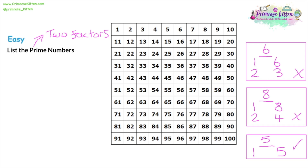Before we start, a really important thing to mention: one can be divided by one and the answer is one, but you only have one number there — one has one factor. It is not a prime number. Prime numbers have got two factors.